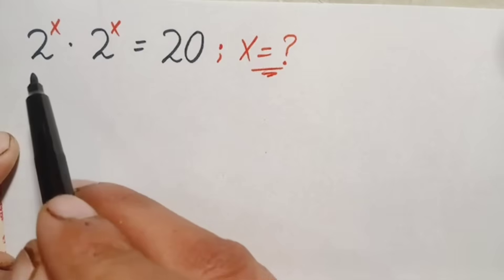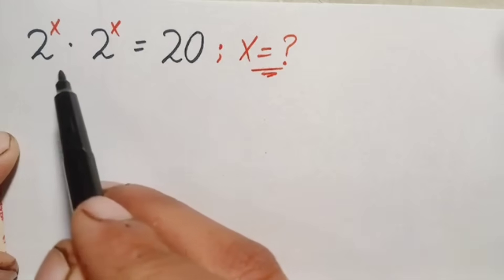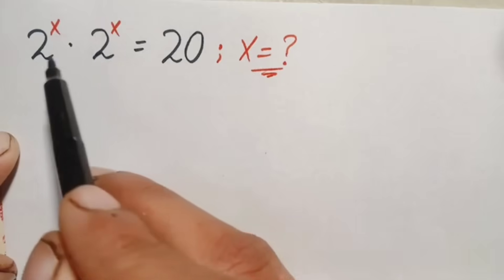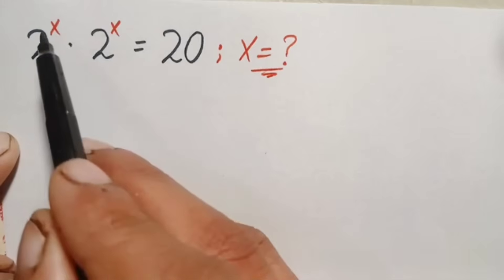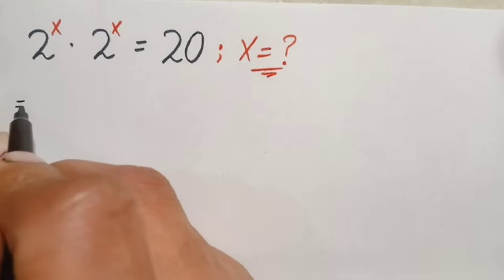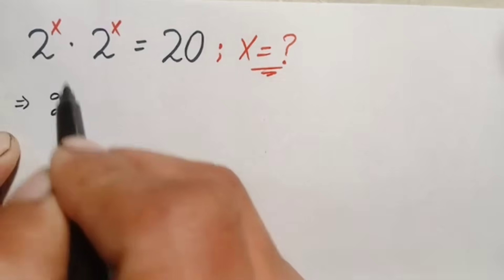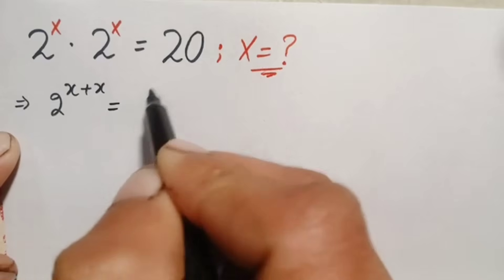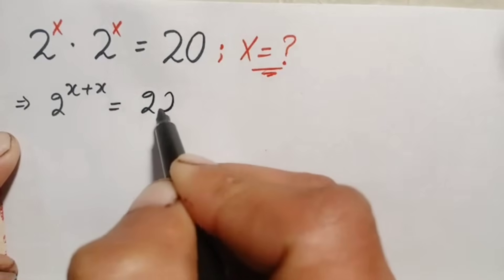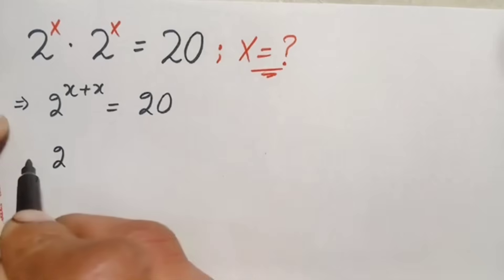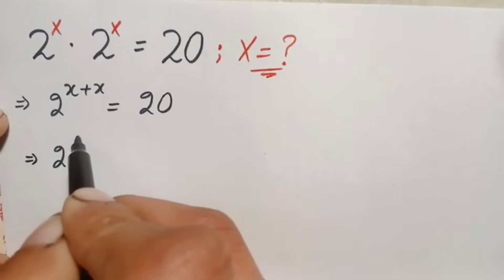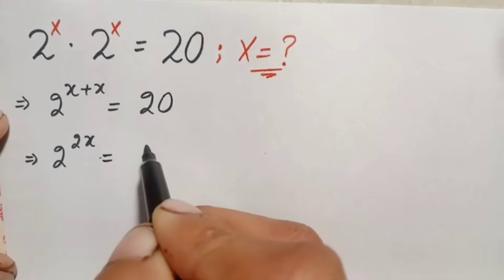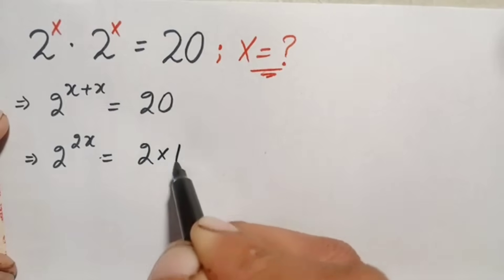Looking at the left hand side, these two numbers are multiplied having the same base. When we have the same base, we can add their powers, so we write the base one time and add the powers. This becomes 2 raised to power x plus x, which is simply 2x, is equal to 20.